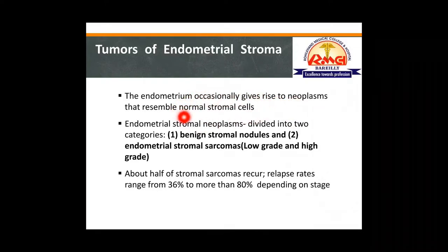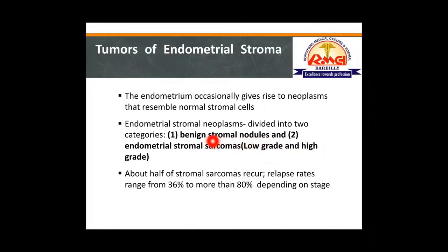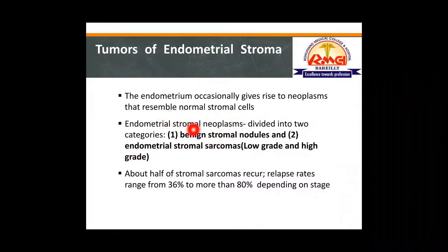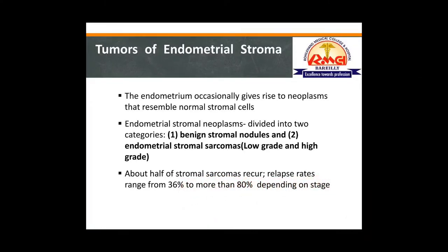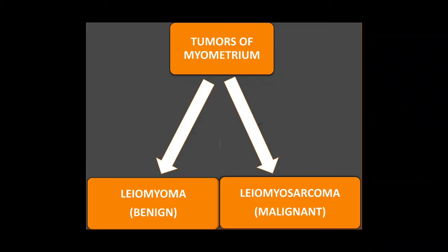Endometrial stromal neoplasms arise from stromal cells and resemble normal stromal cells of the endometrium. They are divided into benign stromal nodules, which don't invade the myometrium, and endometrial stromal sarcomas, which can be either low grade or high grade. These are due to certain chromosomal aberrations. About half of the stromal sarcomas recur, with relapse rates ranging from 36% to more than 80% depending on stage.